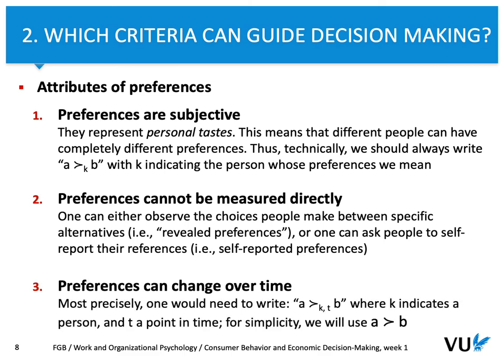And finally, preferences change over time. We could describe the relationship between preferences and time more formally. Typically, preferences can be a function of time. In this symbol, A R-O K T B — K indicates a person and T is a point in time. We can also simplify that and always just use A R-O B. Those are the basic concepts.